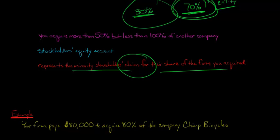To figure out what the non-controlling interest is, we need to know the total value of Chimp Bicycles. $80,000 is only what you paid to get 80%. What is the imputed value of the entire firm, the imputed value of Chimp Bicycles as a whole?